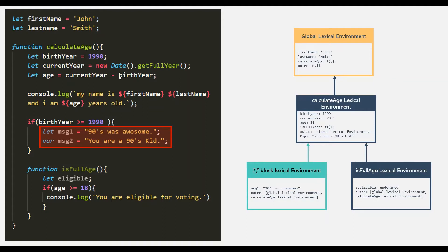This is how the scope chain will look for this program. Remember that the scope chain in JavaScript is implemented using lexical environments, and a lexical environment contains all the variables and functions in the current scope plus a reference to its parent scopes. In this example, the if block and the isFullAge function are adjacent scopes. Here we have two lexical environments for these two adjacent scopes, and they will not have access to each other's variables and functions.